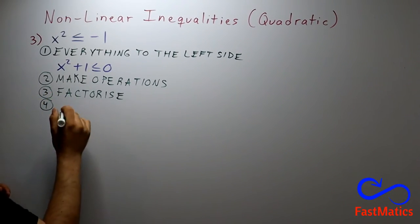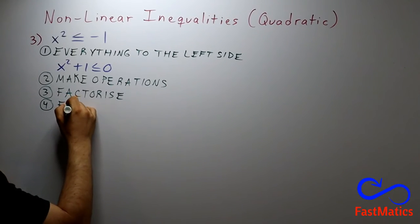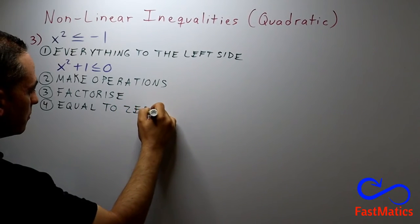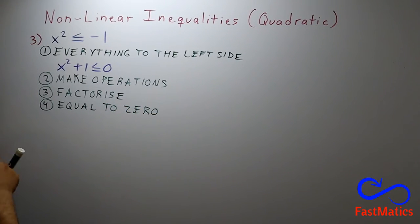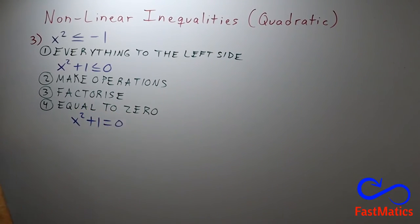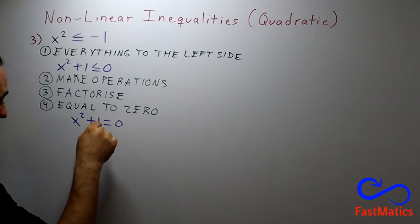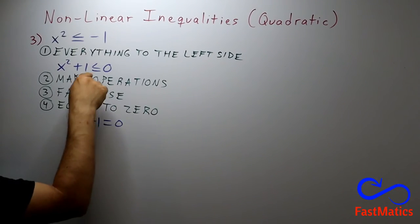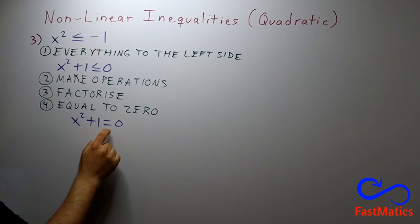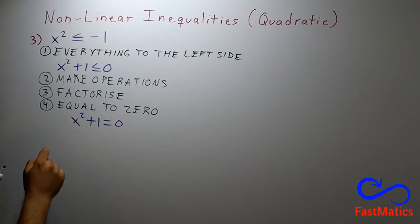After that, equal to zero. We have to put the expression equal to zero. And how to solve it? Well, it is a quadratic equation. Remember, here you have to put the equal sign, not the less than or equal to sign. The equal sign. It is very important in this step four.